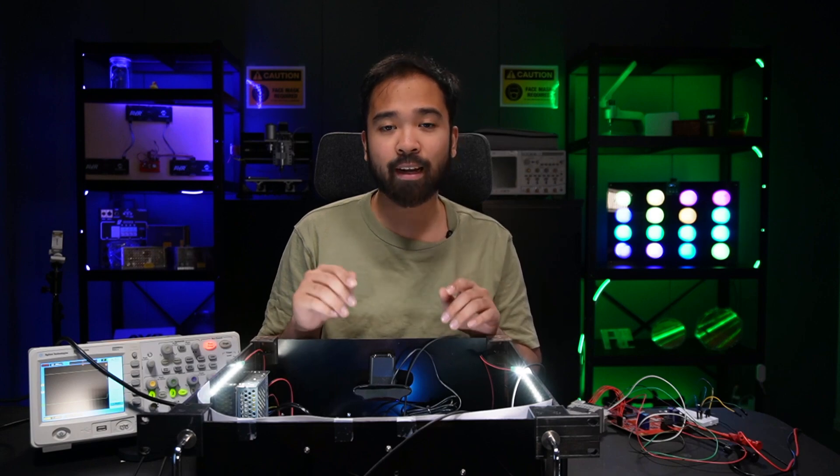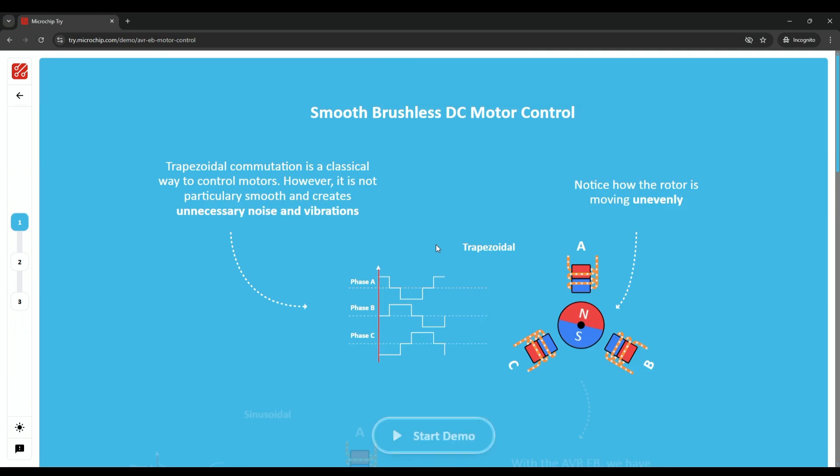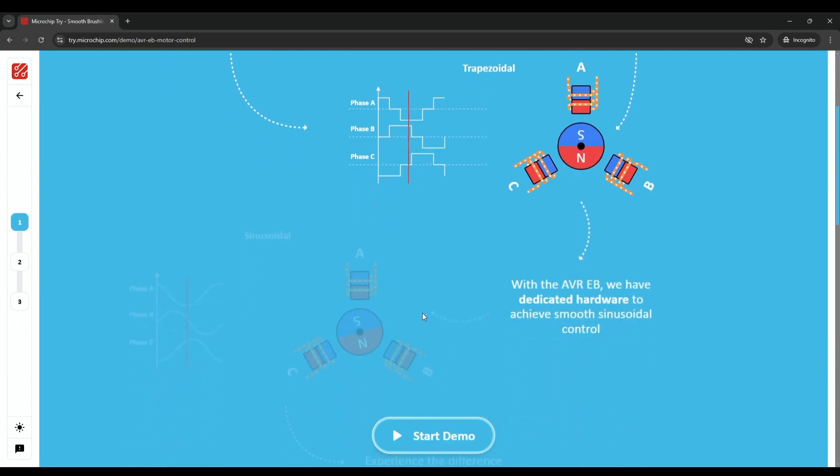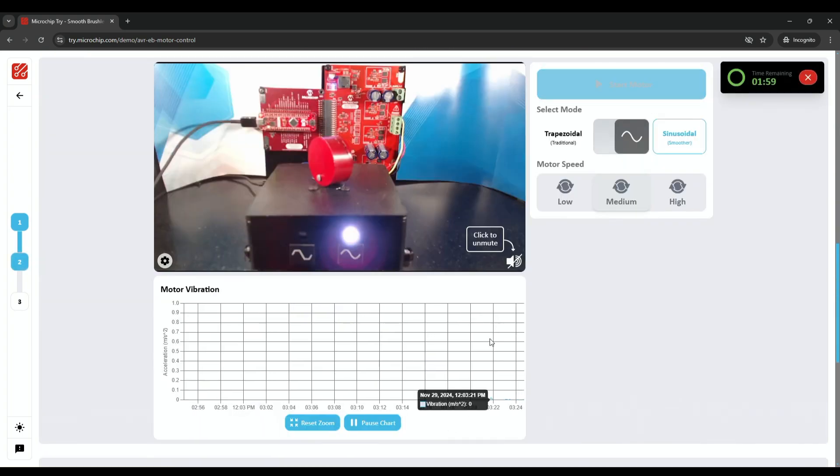And if you want to spin this exact motor right now, you can head over to try.microchip.com, where you can spin it online right now and see the TCE and waveform extension in action. Just head over to the description, or you can Google microchip try.